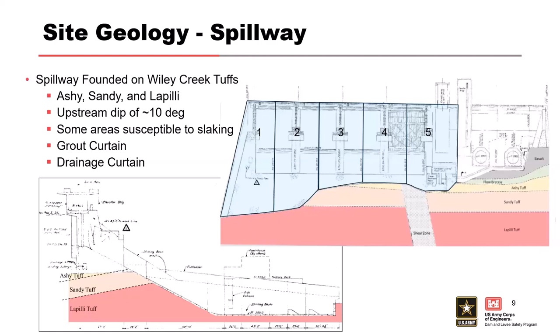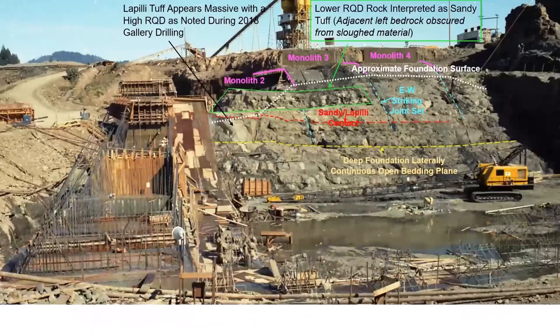Some of the rock is really susceptible to flaking. We get a lot of that information from the original logs that talk about the ashy tuff. They did a lot of testing during construction looking at how, if you wet and dry the rock through repeated cycles, how much the rock breaks up into pieces and erodes. There were some concerns about the ashy tuff during construction. Nevertheless, it does form the foundation of at least a couple of the monoliths.